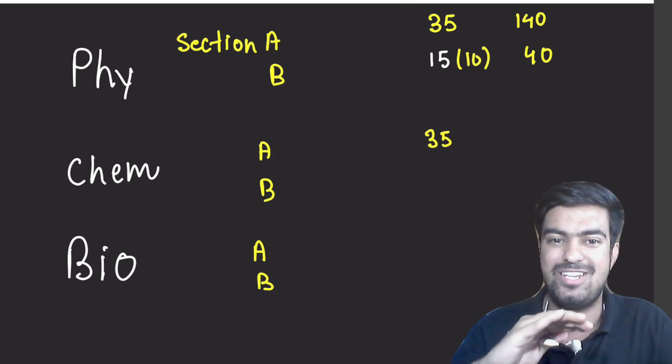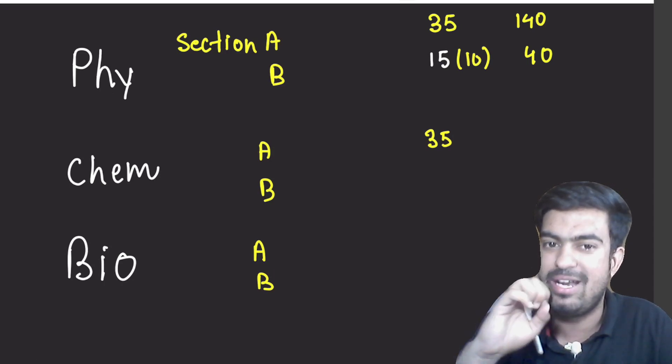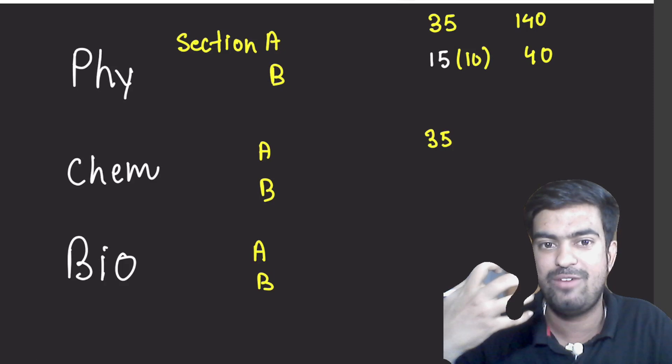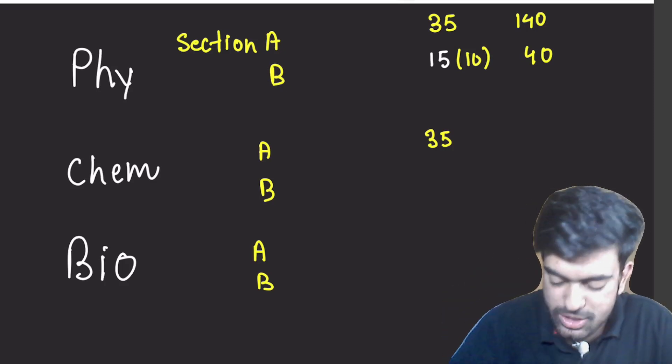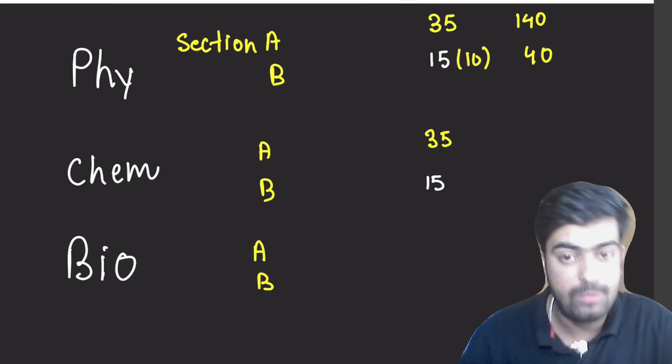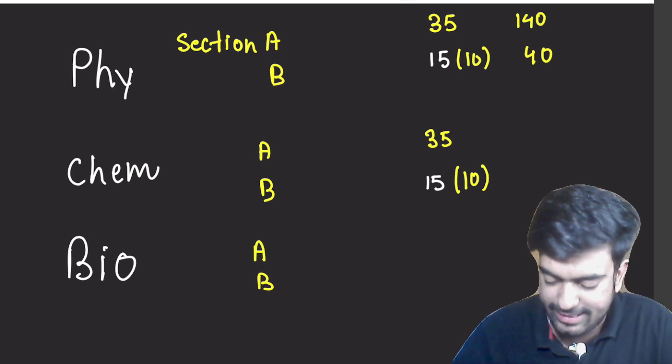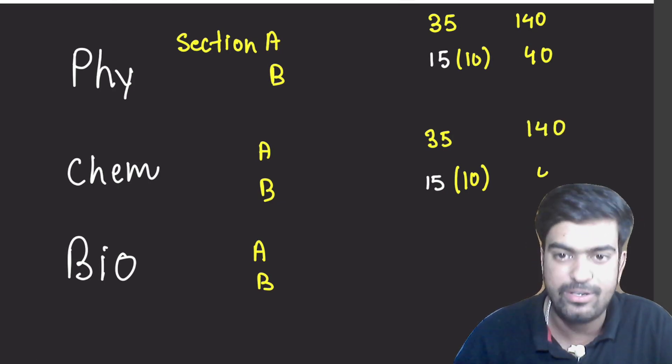In the similar manner, in Chemistry also we will have 35 questions in Section A. And remember that there is no choice in Section A. The only choice which you are able to choose, which questions you have to solve, is in Section B only. So again, total questions will be in Section B 15, but you have to answer only 10. So we have 140 here also and 40 here also, so we will be getting 180 in Chemistry.